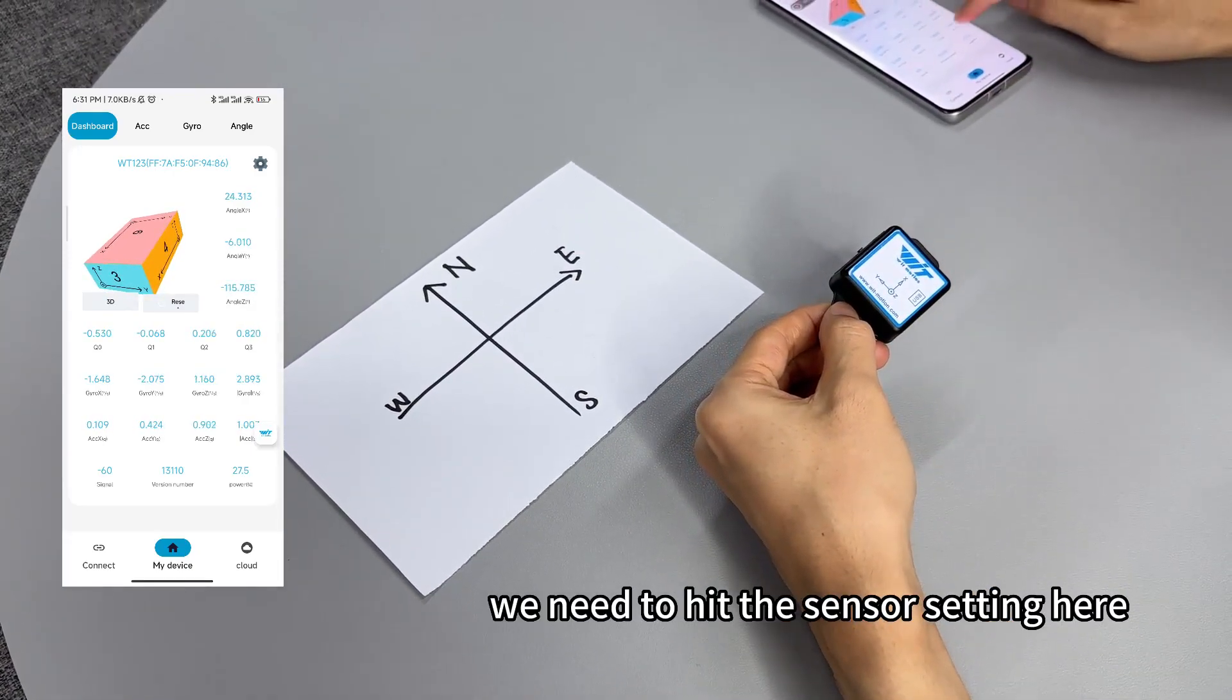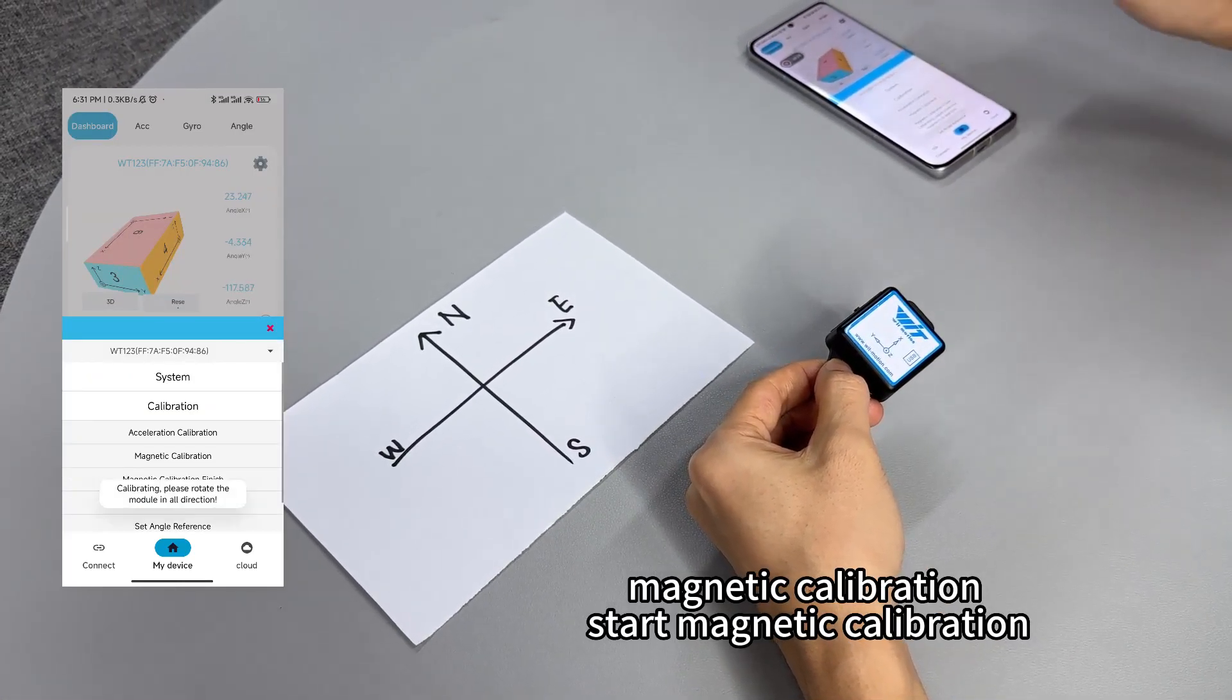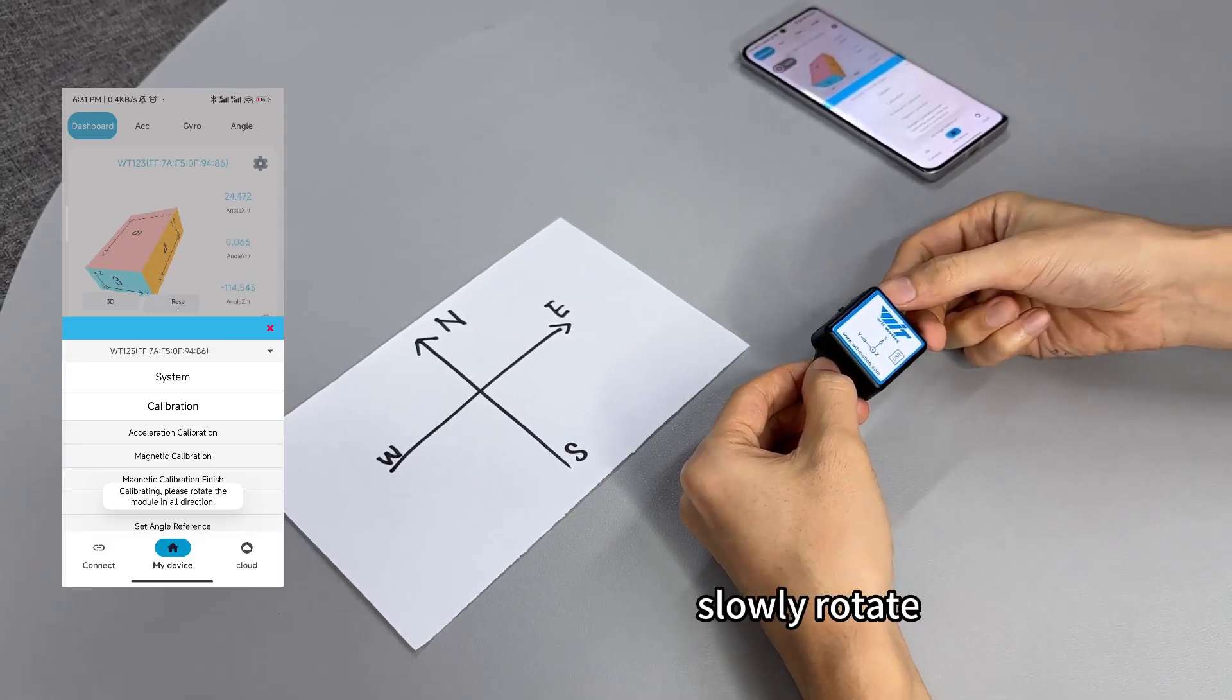We start rotating the sensor. We need to hit the sensor settings here, calibration, magnetic, start magnetic calibration. Okay, very slowly rotate.